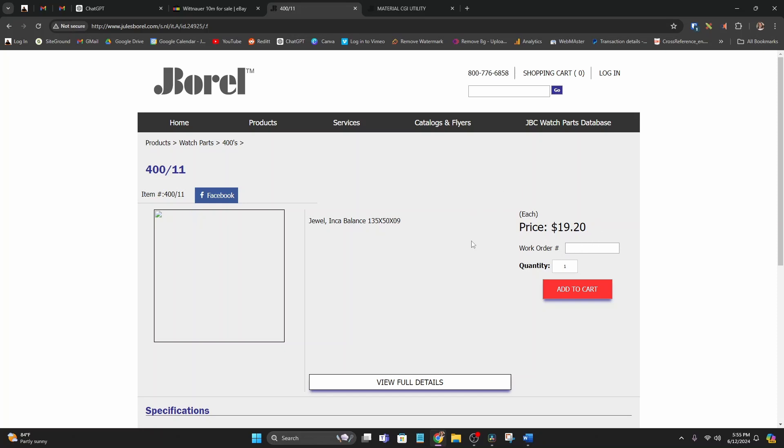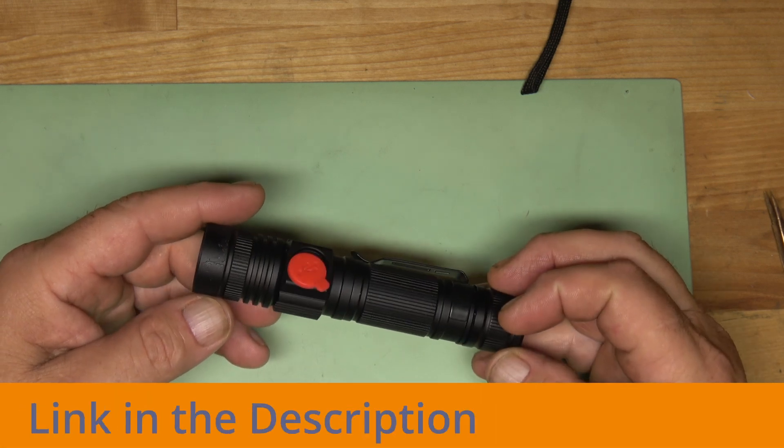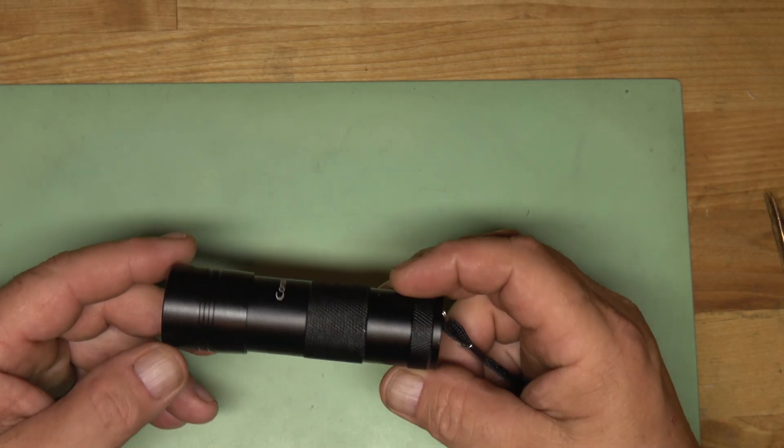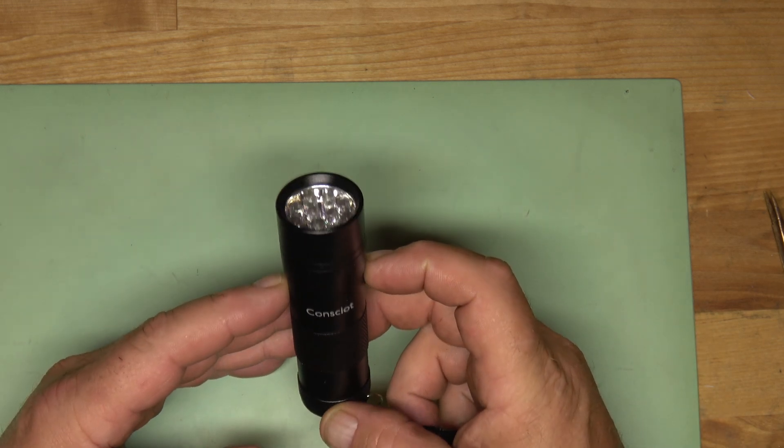To easily find a watch jewel, all you need is this inexpensive UV flashlight. Now, I've bought the six dollar ones and what I found is that they all had problems with the on-off switch not working right.